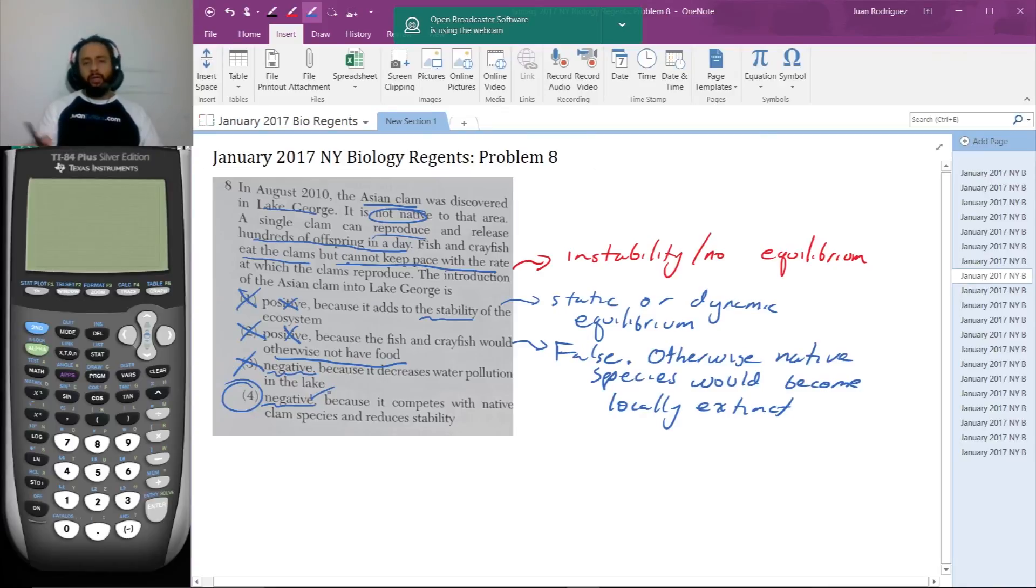And then it's here, it competes with the native clam species and reduces the stability. Now, here, they never mentioned native clam species, right? However, it does reduce stability. So that is the most viable answer, despite the fact that they didn't include the native clam species because of the fact that we know that this is producing a massive amount of instability according to the problem. So that's the answer.